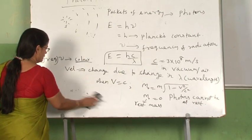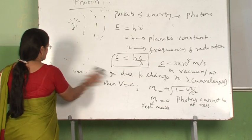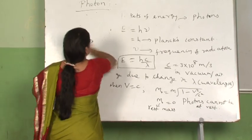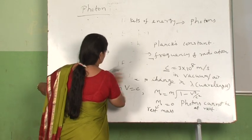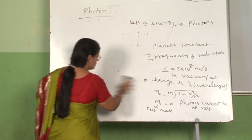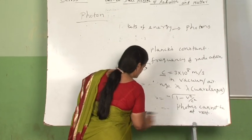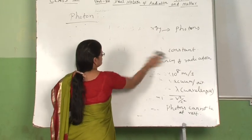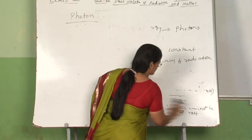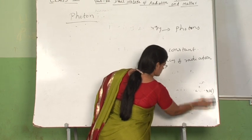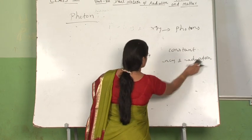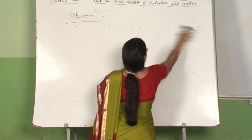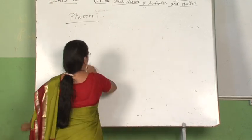One more main feature of photons is that they are uncharged. The proof of this is that if photons are subjected to electric and magnetic fields, they will not be deflected at all. From this we understand that photons are uncharged — they are simply packets of energy.